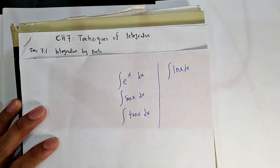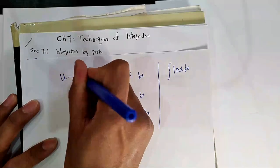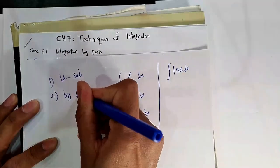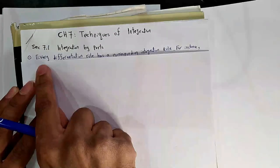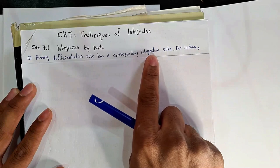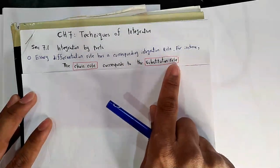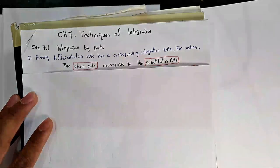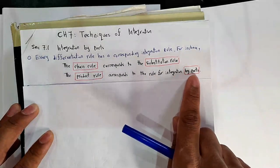Let me state a very important note before we start. In calculus, we have two methods of integration. Method number one: u-substitution. Method number two: integration by parts. For the others in this chapter — sections 7.2, 7.3, etc. — we will discuss specific types of functions. Every differentiation rule has a corresponding rule in integration. The chain rule corresponds to the substitution rule. And the product rule will correspond to integration by parts.